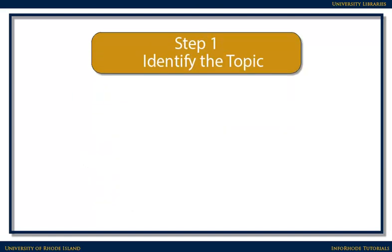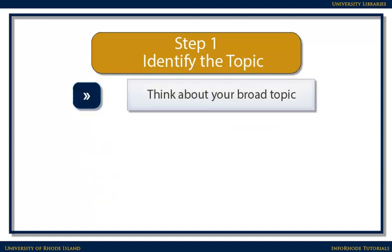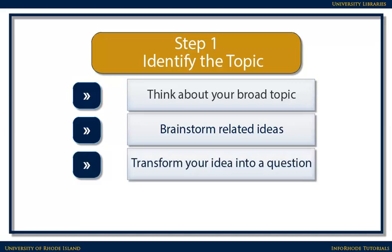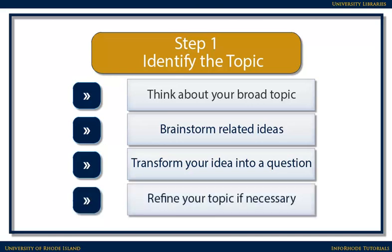Step 1: Identify the topic. Your topic is the idea that you are researching — for example, transportation and the environment. You'll probably want to brainstorm about the topic a bit, thinking of any topics or ideas that relate to your research and synonyms for the terms that you come up with. Think about your topic as a question you want to answer, for example: how do transportation choices affect the environment? Then you may want to refine your question to make it more specific — for instance, how does commuting affect air quality in New England?